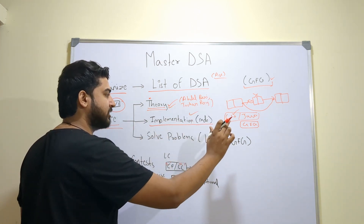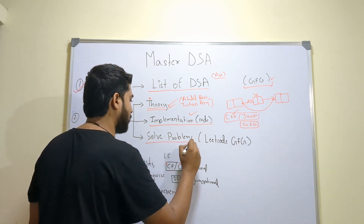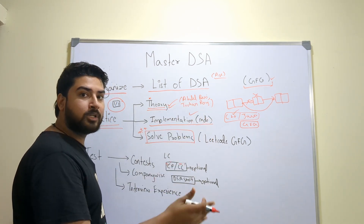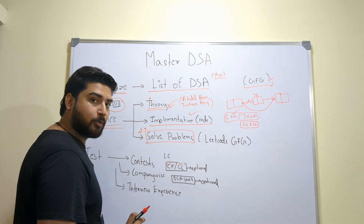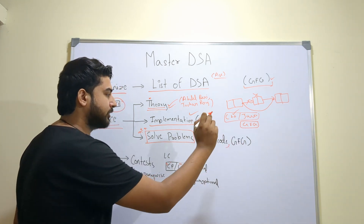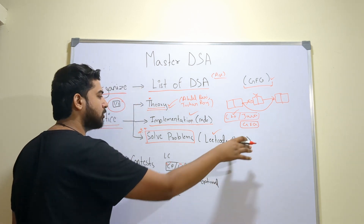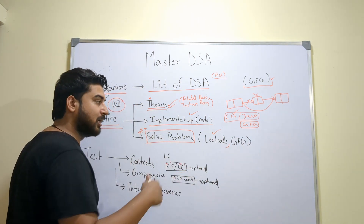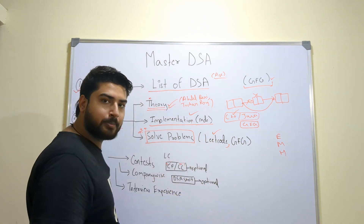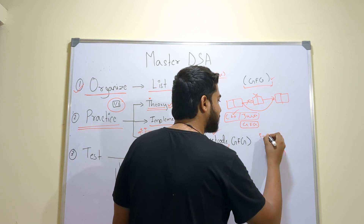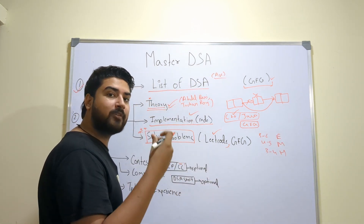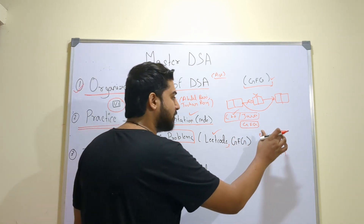Once theory and implementation are done, we have the most important part: solving problems. Even if you know the complete theory and implementation, it's all a waste if you can't solve the problems. Use LeetCode and GeeksforGeeks — really just LeetCode is enough. Go in order of difficulty: first easy, then medium, then hard. The bare minimum is five to six easy problems, four to five medium problems, and three to four hard problems per topic. Solve as many as you can for the best chance, but this is the minimum.